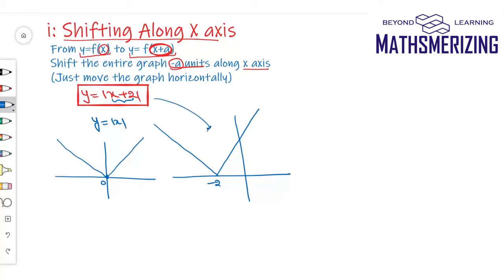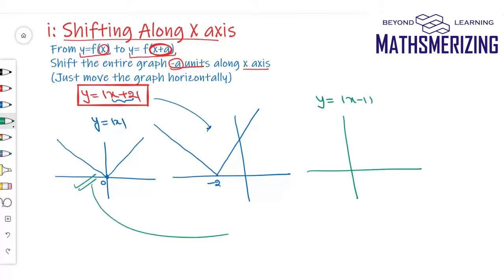Now say I have to draw the graph of y equals mod of (x−1). I'll take the graph of mod x and shift the entire graph plus 1 unit along the x-axis.